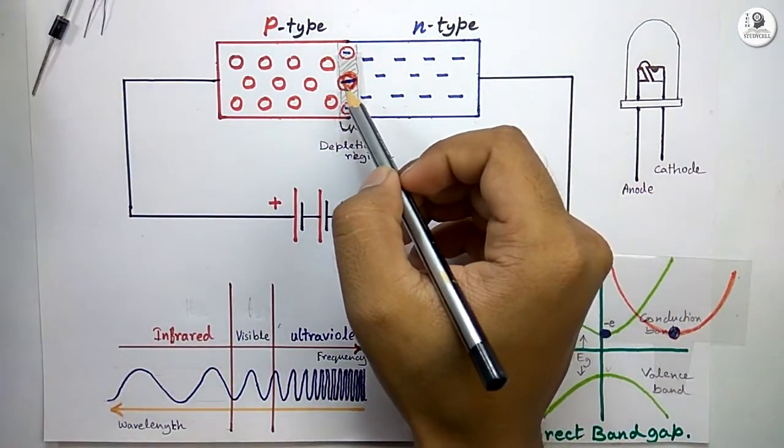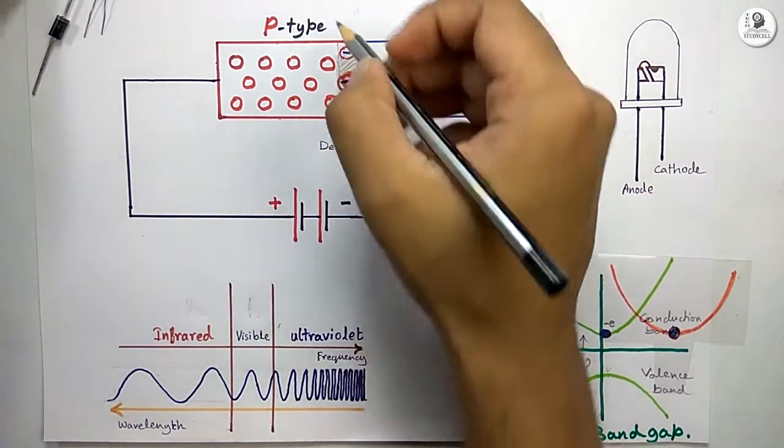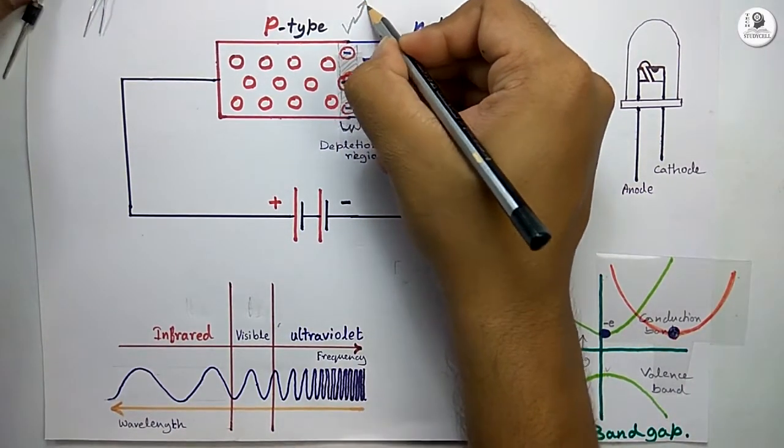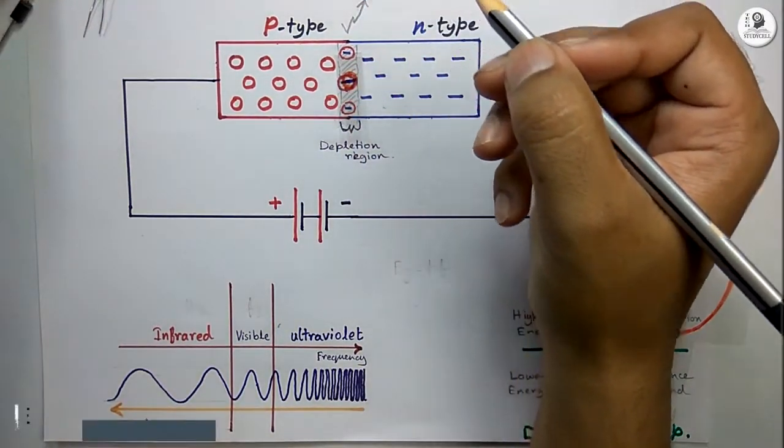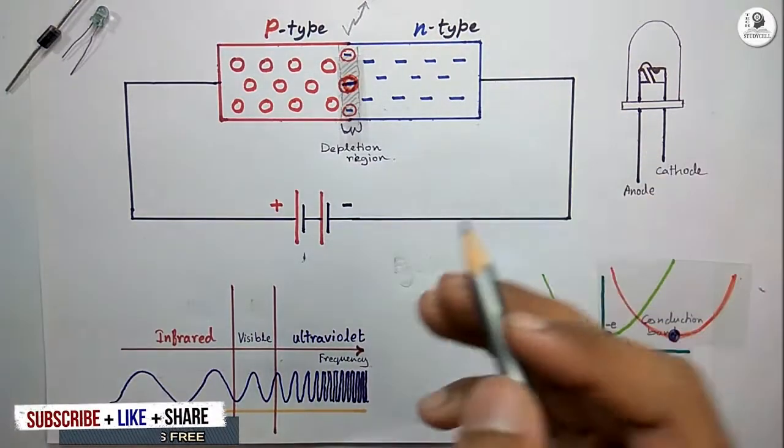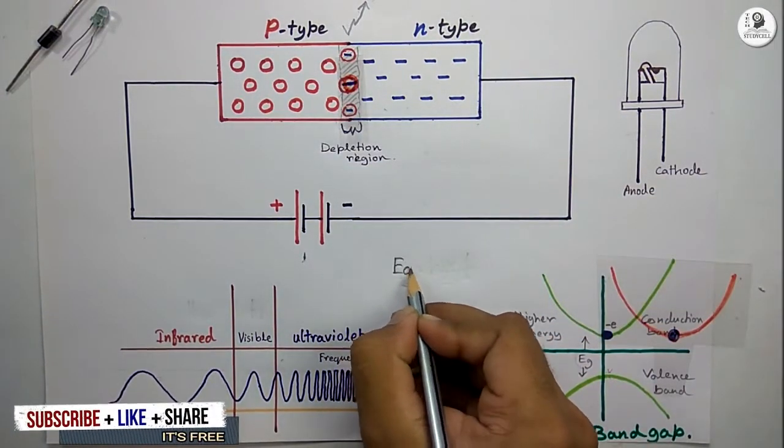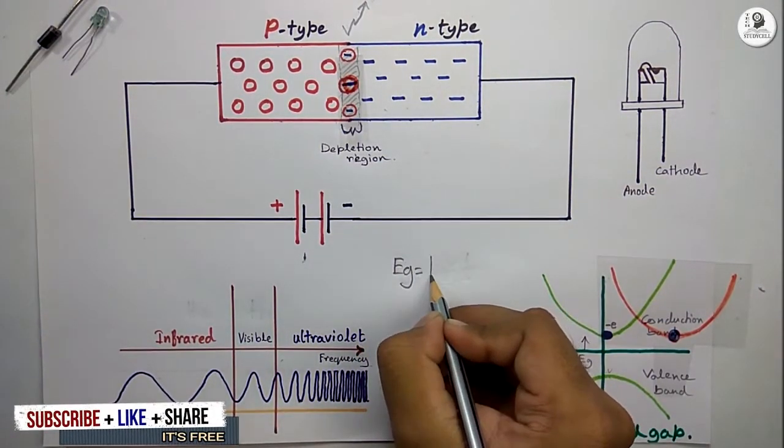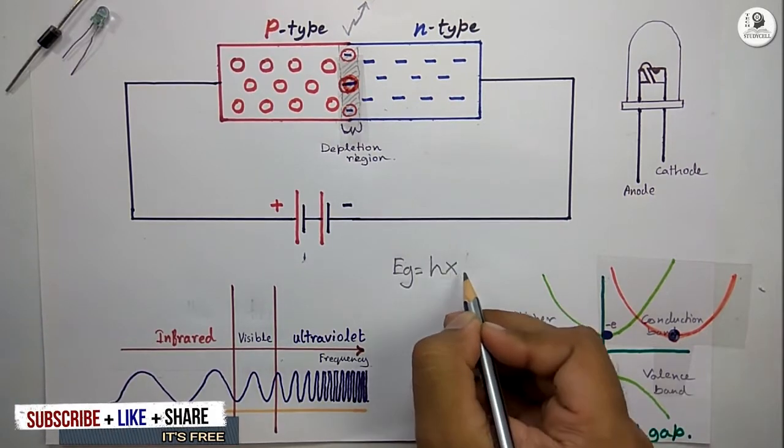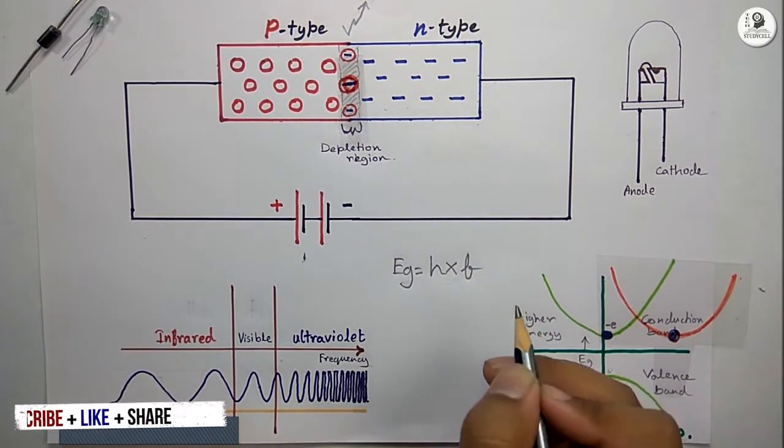After meeting, the holes and electrons at the depletion region emit some energy as a photon. The value of the emitted photon is equal to Eg, which equals the multiplication of Planck constant h and the frequency of the electromagnetic radiation.